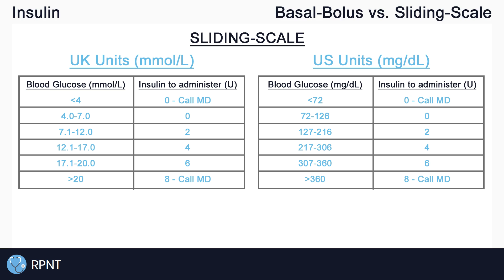For a sliding scale, usually before each meal and before bedtime, blood glucose levels would be checked and compared against a chart like this, and the chart tells us how much insulin to administer. On the left side of the charts you can see the different ranges of the client's potential blood glucose levels, and on the right side of the charts you can see how much insulin should be administered at each range.